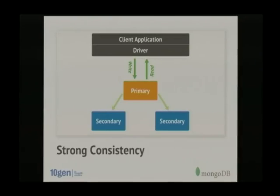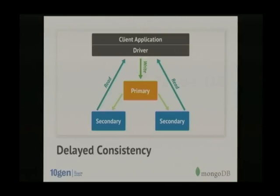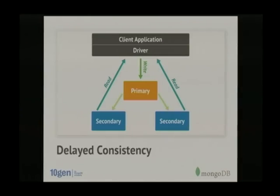What does developing with replica sets look like? We have different options depending on what level of consistency you want. If you want strong consistency, you read and write to the primary and secondaries are only used for replication — basically read-after-write consistency. If you're okay with eventual consistency, you can set a read preference to read from a secondary while writing to the primary, though this may not necessarily speed up performance since the secondary still has to replicate all operations from the primary.